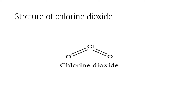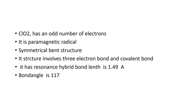If you look at the types of bonds, there are three-electron bonds present and covalent bonds also present. Due to presence of unpaired electron, it shows resonance and delocalization of unpaired electron. Resonance hybrids can also be observed. The bond length between the Chlorine and Oxygen is 1.49 angstroms. Bond angle is 117 degrees.